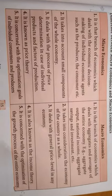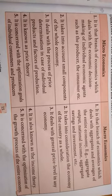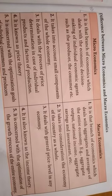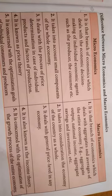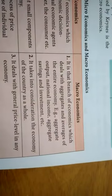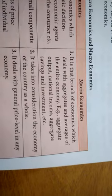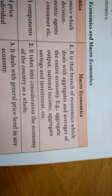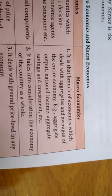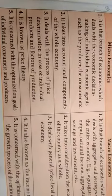Microeconomics is the branch of economics which deals with the economic decision making of individual economic agents such as the producer and the consumer. How the price is determined in different market types by producers and consumers — by demand and supply — is covered in microeconomics. Macroeconomics is the branch of economics which deals with aggregates and averages of the entire economy — aggregate output, national income, aggregate savings, and investment — to understand how the entire economy is growing.